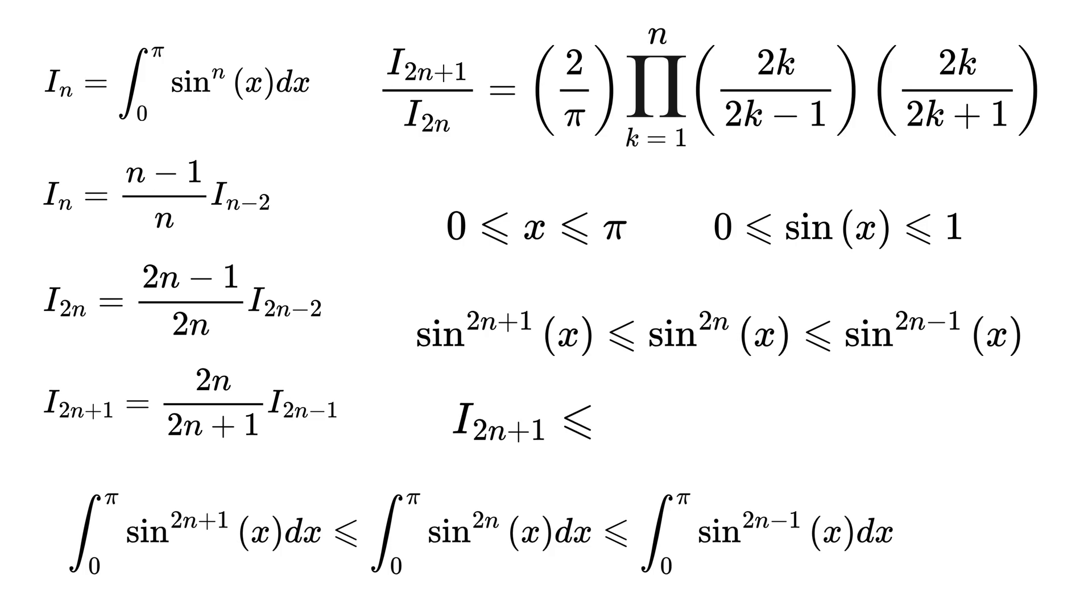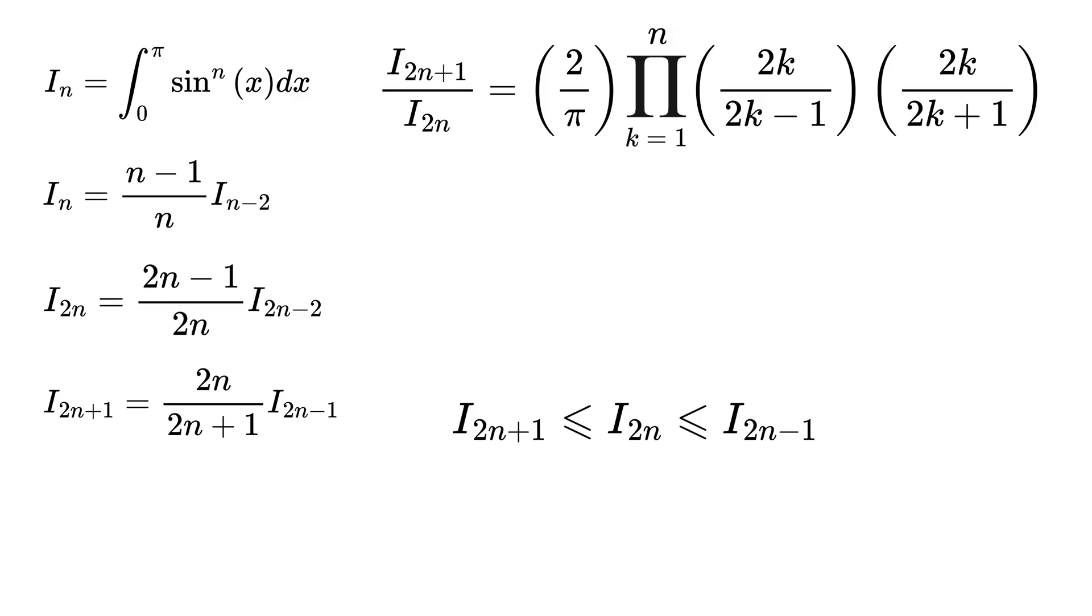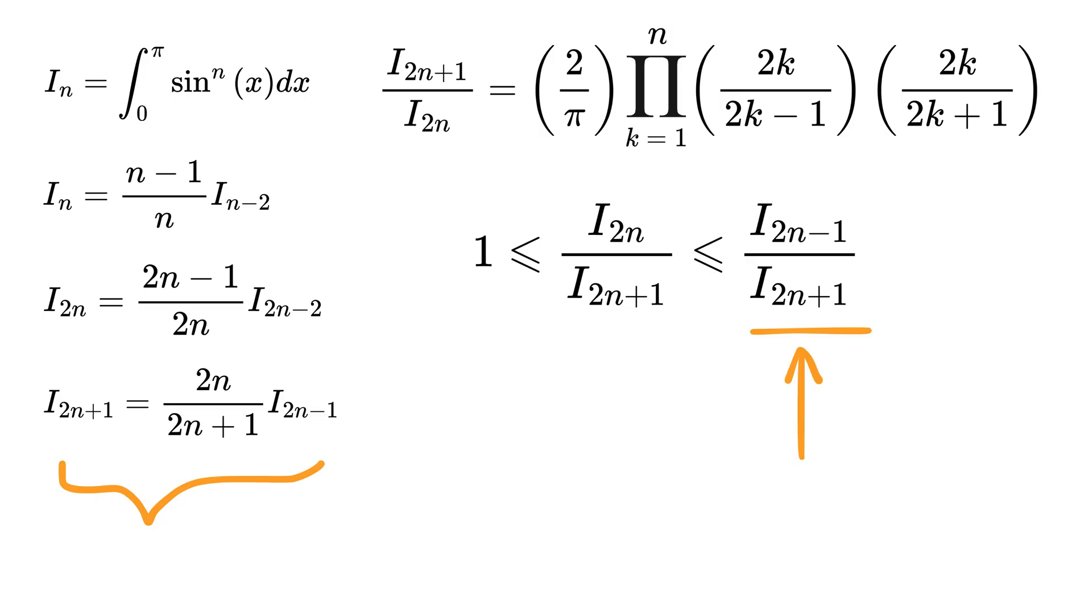So they will become I_(2n+1) ≤ I_(2n) ≤ I_(2n-1). Next we will divide all of them by I_(2n+1) to get this first term as 1, then this will become I_(2n)/I_(2n+1), and this will become I_(2n-1)/I_(2n+1). But hey, look here, this ratio is nothing but (2n+1)/(2n).